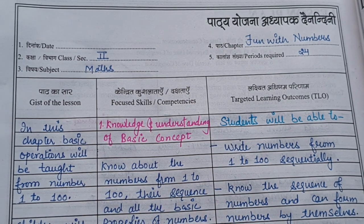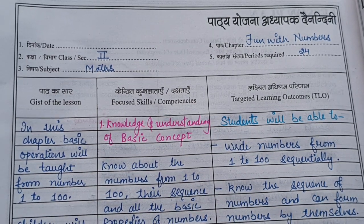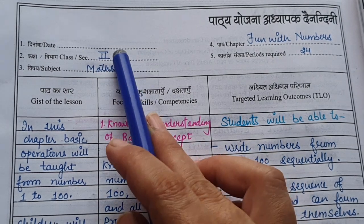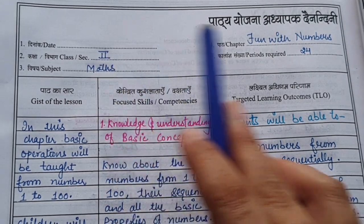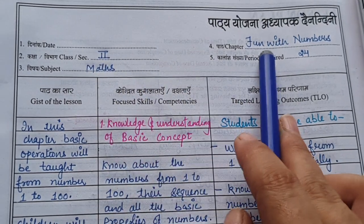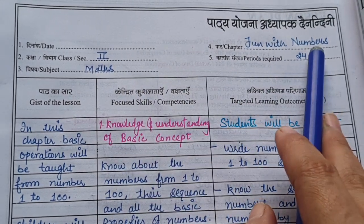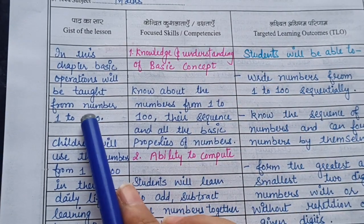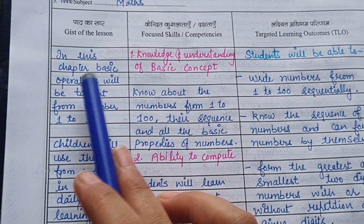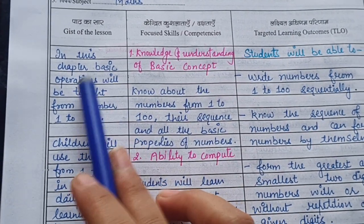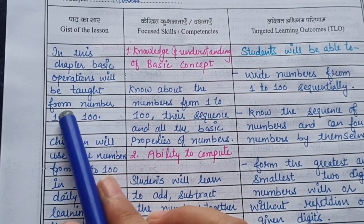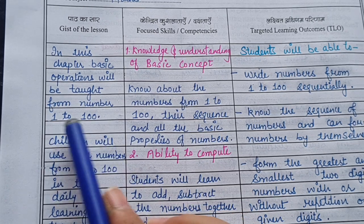Hello dear teachers, welcome to the lesson plan series. Let's talk about the lesson plan for Class 2 Maths, Chapter: Fun with Numbers. In this chapter, basic operations will be taught using numbers from 1 to 100.